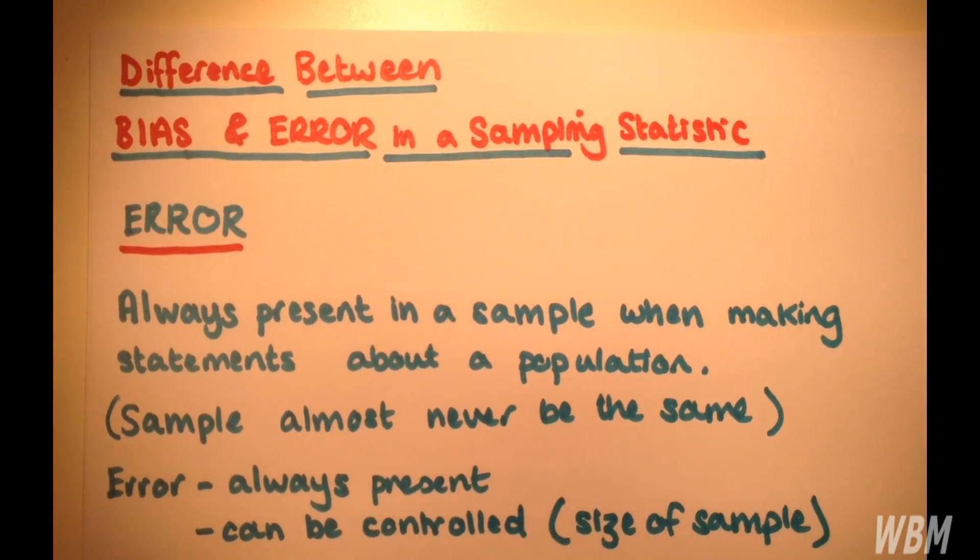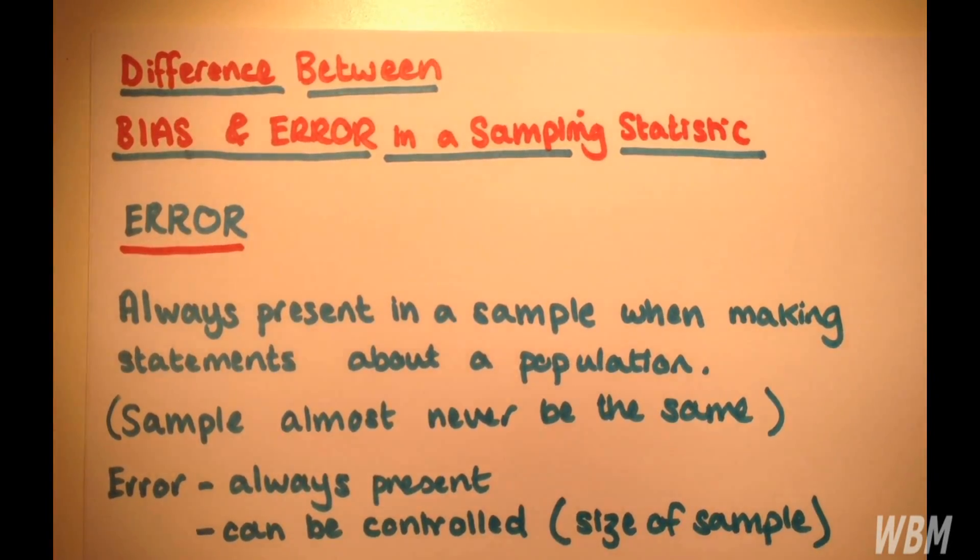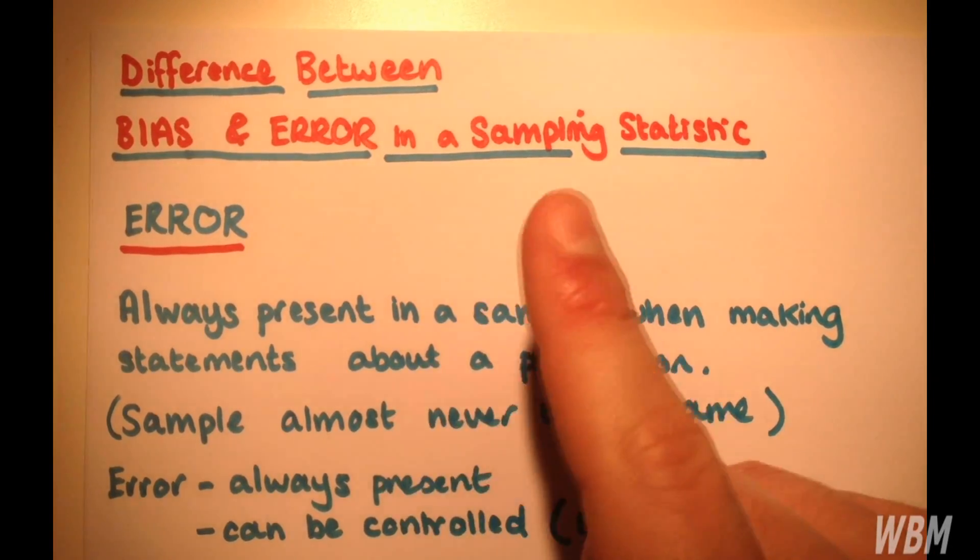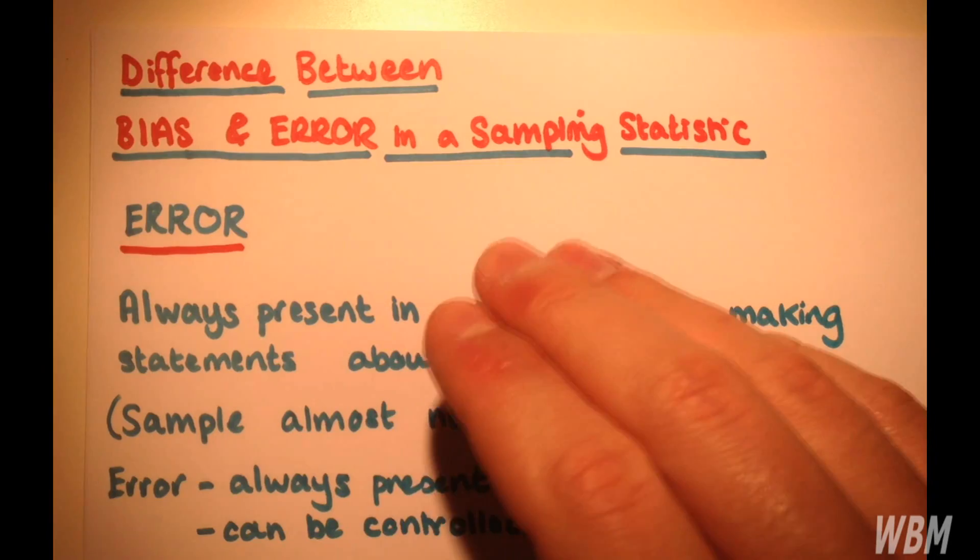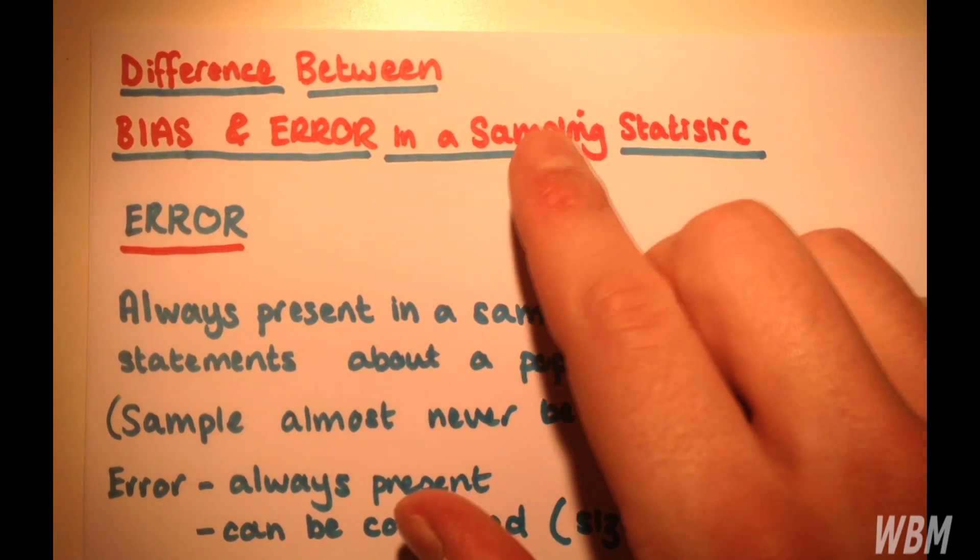In my previous video I explained what a sampling statistic is. That's when you take a sample from a population and we make observations about the population using the sample.